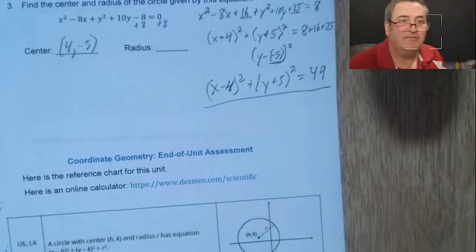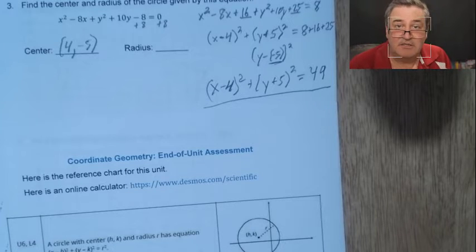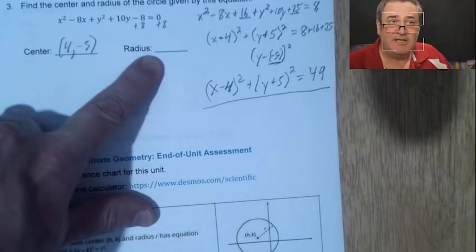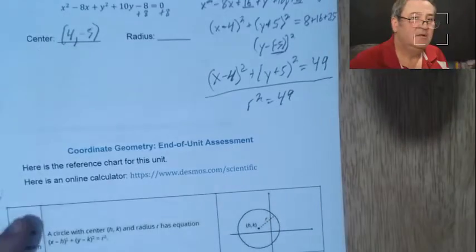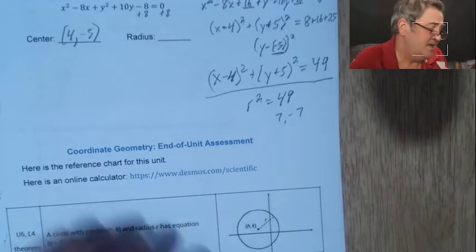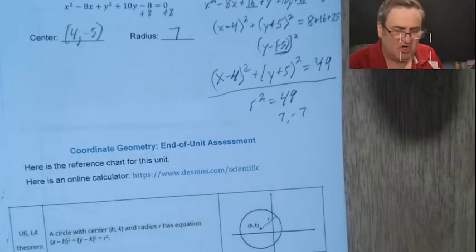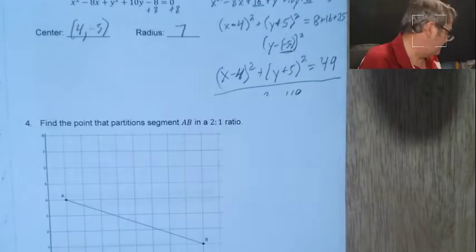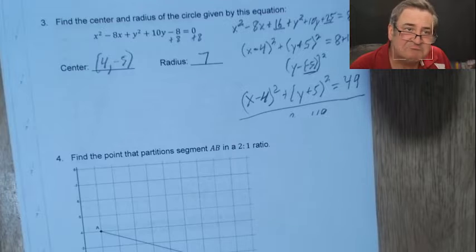Since (y + 5) = (y − (−5)), the y-coordinate of the center must be −5. The right side equals r², and r² = 49, so r = 7 (we take the positive value since radius is a distance — you can't have a negative radius). So the center is (4, −5) and the radius is 7. This problem probably requires the most work on the test, so feel free to rewatch this section.